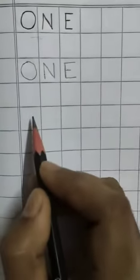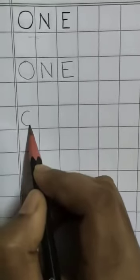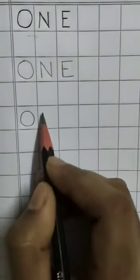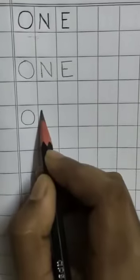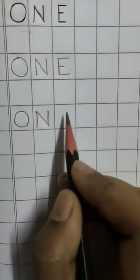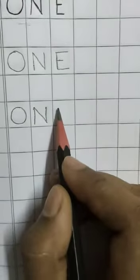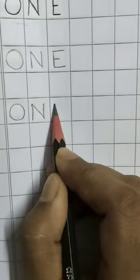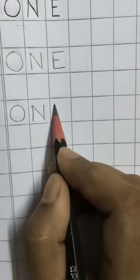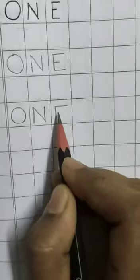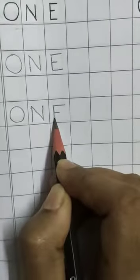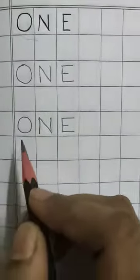So one more time: first, just a circle — O. Then N: standing line, then backward slanting line, then another standing line — complete. Then E: first a standing line, then three sleeping lines. Complete. This is O-N-E, one. And here I will tell you another process.